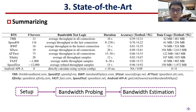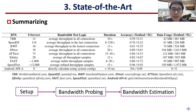The most representative ones are listed here. We find that today's bandwidth tests usually contain three processes. First, during the setup process, the client chooses one or more servers with the lowest latencies. Then, the client conducts bandwidth probing with these test servers. Finally, it estimates the overall bandwidth.